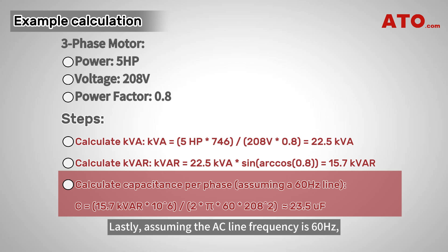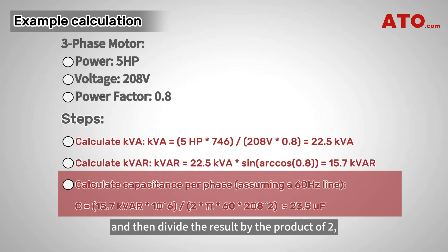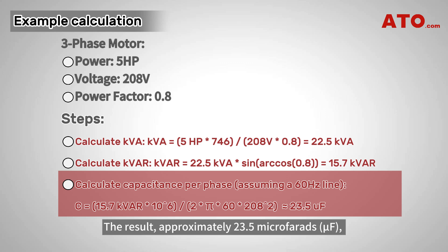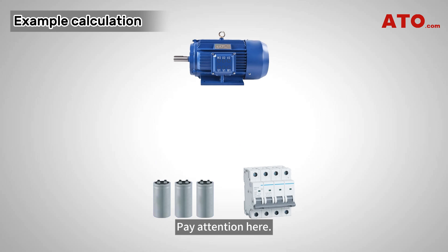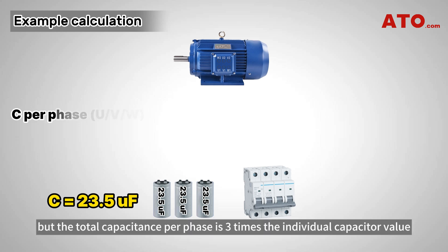Lastly, assuming the AC line frequency is 60 hertz, multiply 15.7 kVAR by 10 to the power of 6, and then divide the result by the product of 2π × 60, representing the line frequency, and 208 squared. The result, approximately 23.5 microfarads, signifies the capacitance needed for your electric motor. Note that this microfarad value should match the size of each capacitor, but the total capacitance per phase is three times the individual capacitor value.